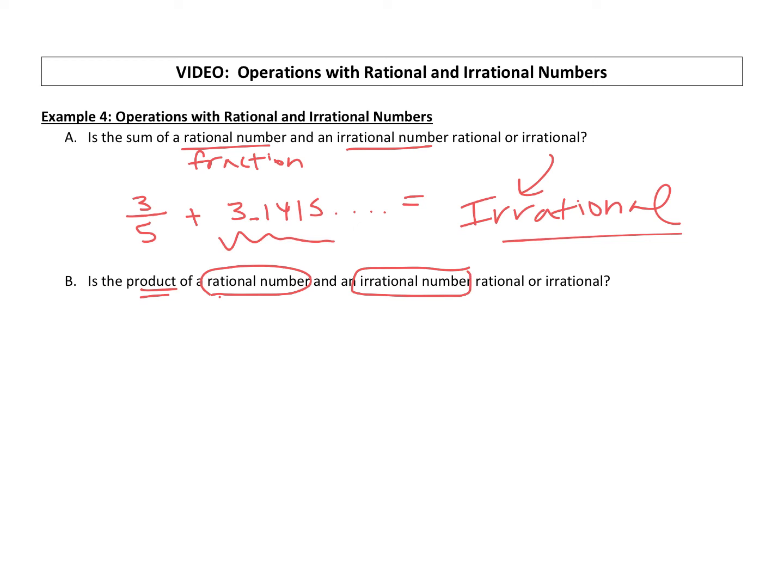If we look at our example up here, three-fifths times pi, 3.1415 and so on. What are we going to get back? A rational number that can be written as a fraction, or an irrational number?